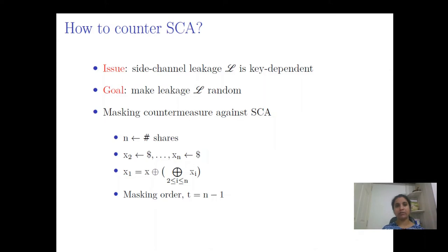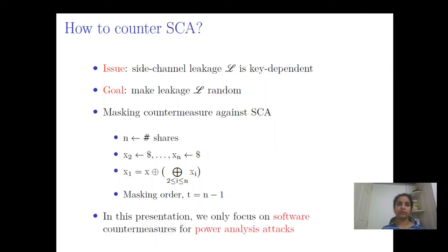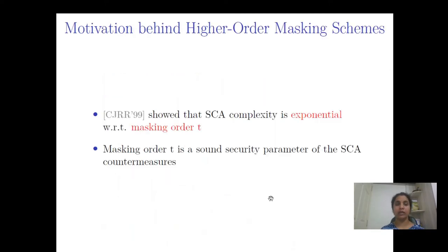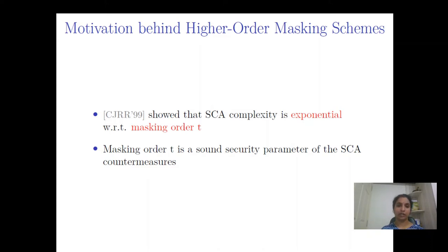The security parameter for the masking scheme is represented with T. As per the state of the art, T equals n minus 1. Our focus will be on software countermeasures to power side channel attacks. Even though a masking scheme secure at T-th order is prone to attacks at T+1-th order, Chari et al. in their Crypto 99 work demonstrated that the adversary requires exponential effort in masking order to mount a side channel attack. Hence, we can consider the masking order as a sound security parameter.